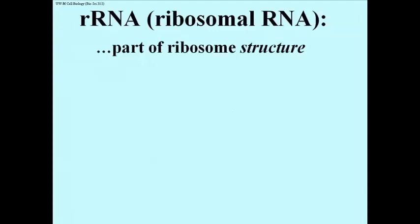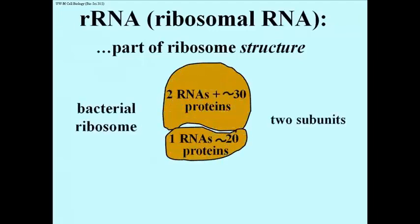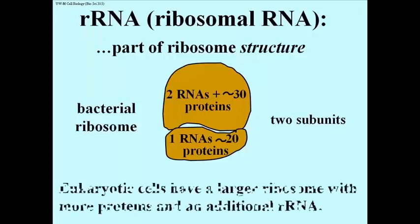The ribosomal, or rRNA, is part of the ribosome structure. There are two subunits, a large one above and a small one below. The large subunit in bacteria is made of two ribosomal RNAs and about 30 proteins. The small subunit is made of one RNA and about 20 proteins. Eukaryotic ribosomes are a bit larger and have a few more proteins and in fact one more RNA altogether.